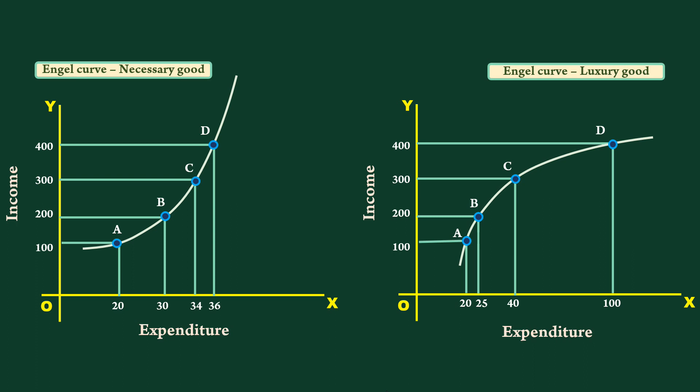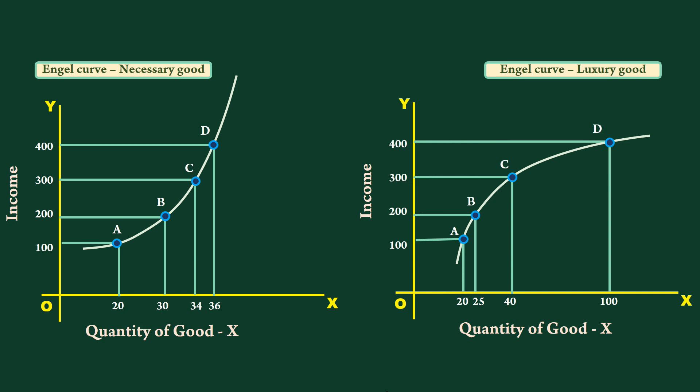To obtain Engel Curve from Income Consumption Curve, we are going to make a small change. Instead of expenditure, we are going to use quantity purchased of a good.